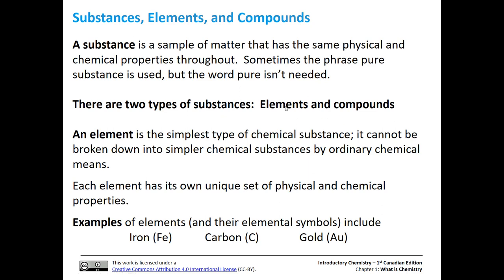Now a couple more terms that can get confusing when you're just starting out: substances, elements, and compounds. A substance is a sample of matter that has the same physical and chemical properties throughout. There are two different types of substances — elements, which are what we see on the periodic table, and compounds, which are combinations of elements. An element is the simplest type of chemical substance; it can't be broken down into simpler ones by ordinary chemical means. Each element has its own set of physical and chemical properties. Examples include iron, carbon, and gold.